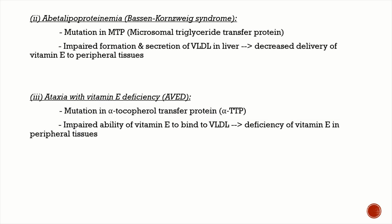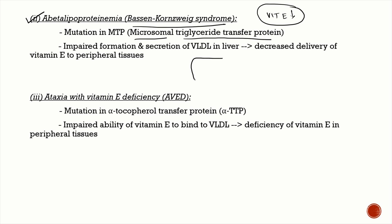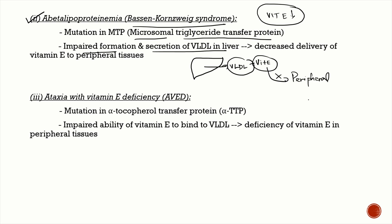There are rare genetic causes of Friedreich's ataxia due to vitamin E deficiency. The first is abetalipoproteinemia, also known as Bassen-Kornzweig syndrome, caused by a mutation in the microsomal triglyceride transfer protein (MTP). Since VLDL carries vitamin E, impaired VLDL formation and secretion from the liver means vitamin E cannot reach peripheral tissues.